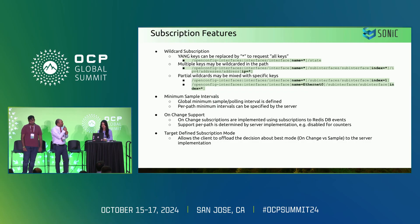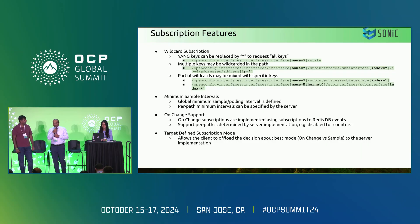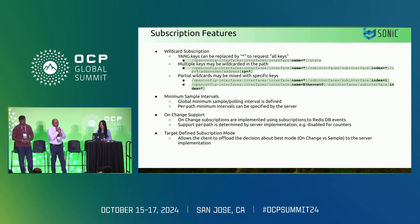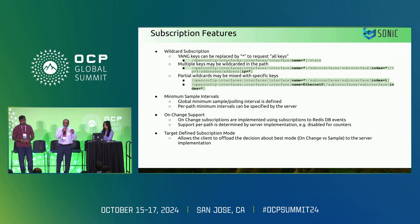There is also a minimum sample interval. We have a global minimum on the sample interval and can also specify a per-path minimum on the server, so the frequency of a sample subscription can be determined in the server itself. On-change support is implemented using subscriptions that rely on the keyspace notification of the Redis DB. Any keyspace notification that comes to the GNMI server will be converted into the OpenConfig yang format and notified back to the controller.